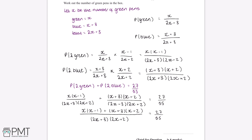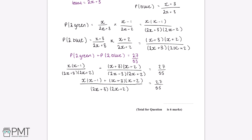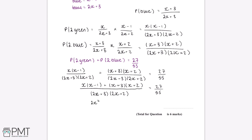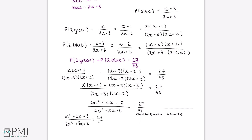Expanding and simplifying both the numerator and the denominator gives 2x squared plus 4x plus 6 divided by 4x squared plus 10x plus 6, equal to 27 over 55. Dividing numerator and denominator by 2 simplifies this to x squared plus 2x plus 3 divided by 2x squared plus 5x plus 3, equal to 27 over 55.